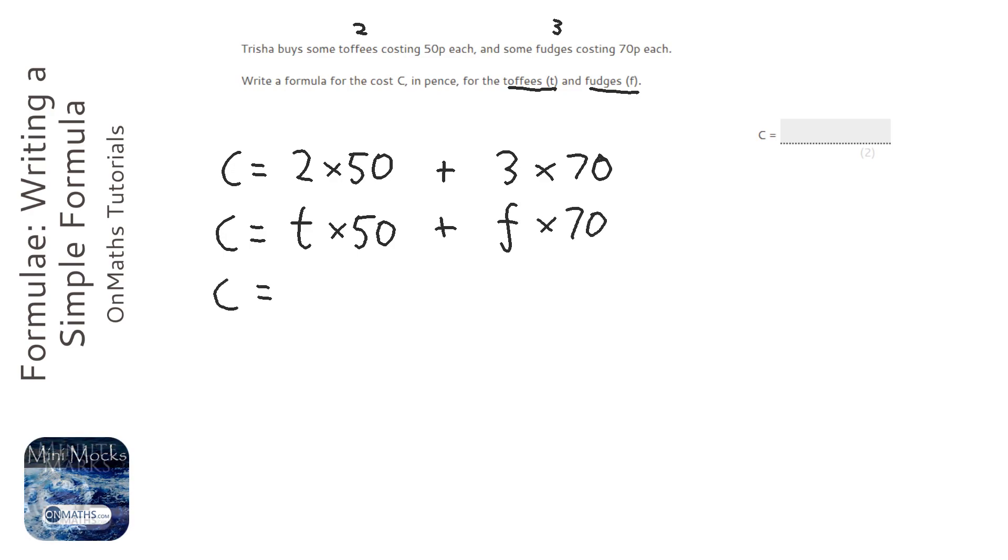Now be careful, it does want the cost in pence, but sometimes it wants it in pounds. So if it wants it in pounds it'd be 0.5t plus 0.7f. So the answer is C equals 50t plus 70f and that can be either way around.